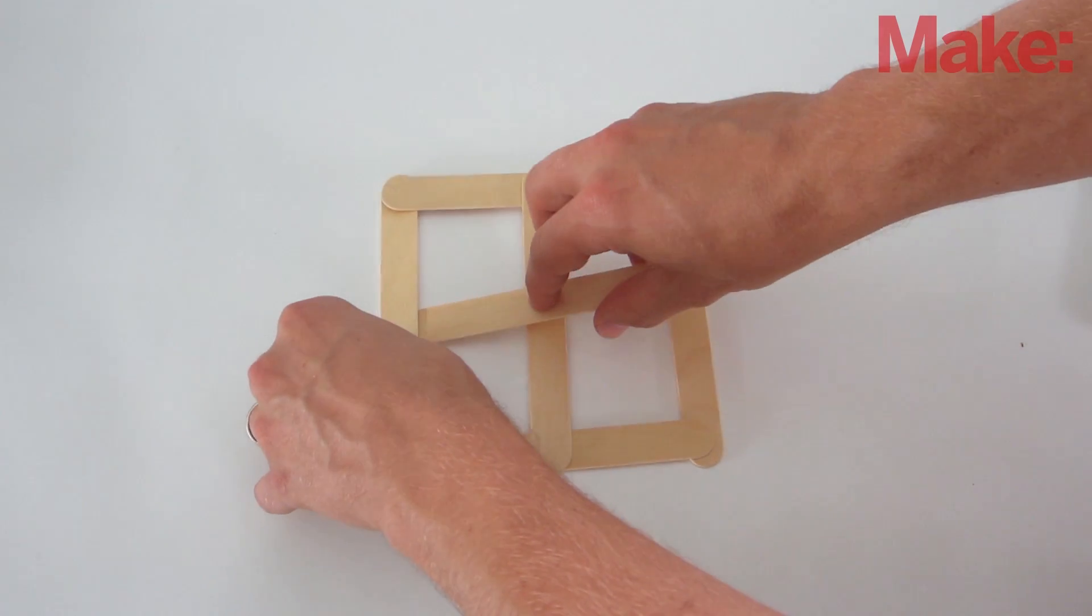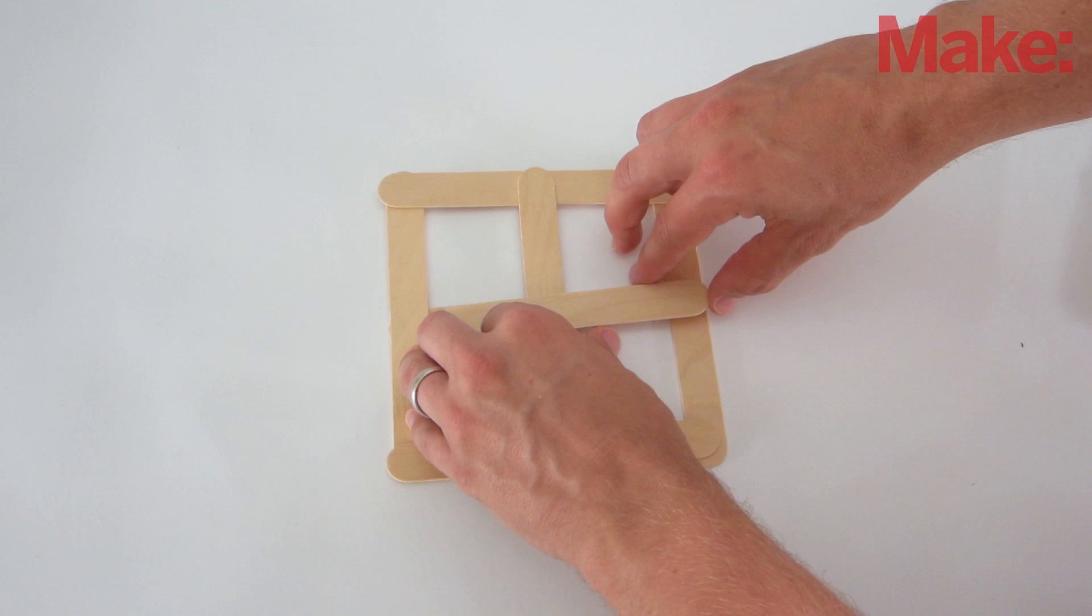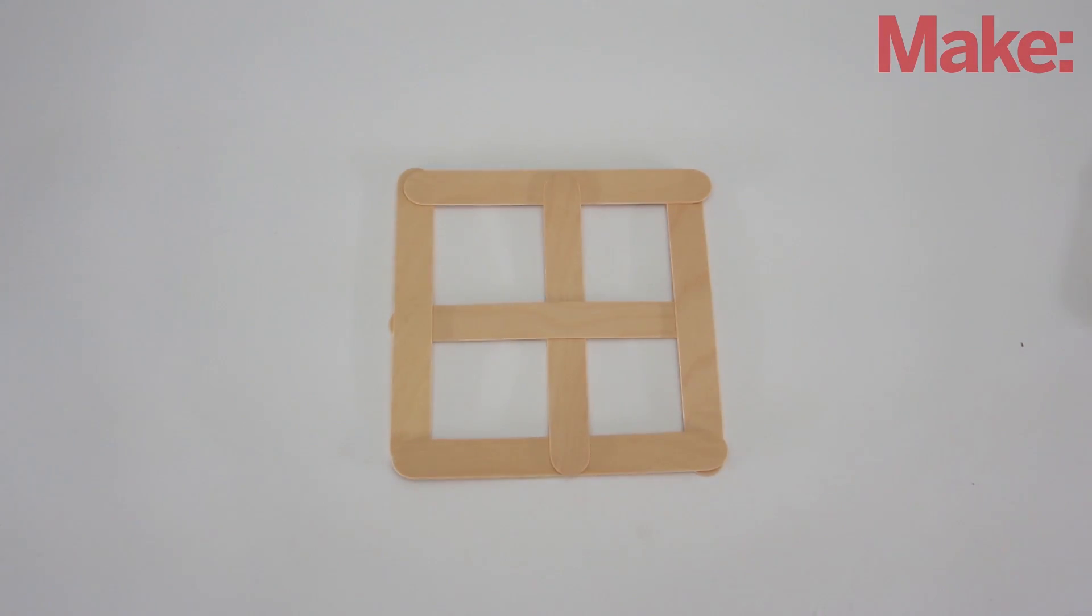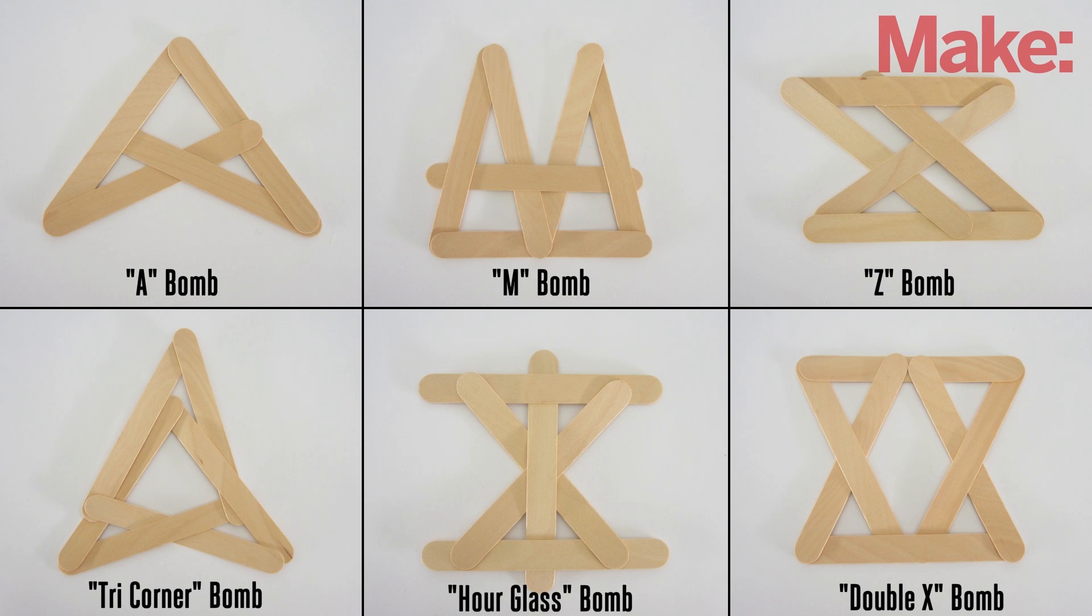Lastly, weave one final stick through the center so that it goes under the first two sticks and over the center stick. This makes a square bomb. There are a lot of other configurations that you can try, so feel free to experiment.